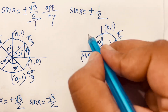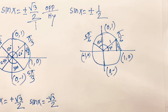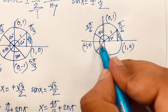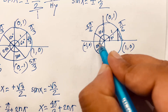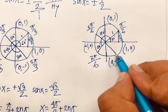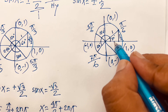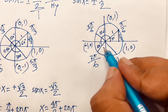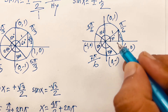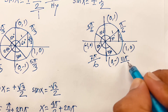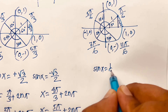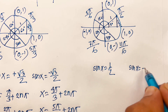So 150 degrees is 5pi over 6 in radian. The negative case is 180 degrees plus 30, which is 210 degrees, which in radian is 7pi over 6. And 360 degrees minus 30 is 330 degrees, which is 11pi over 6. So when sin x equals positive half, and when sin x equals negative half.